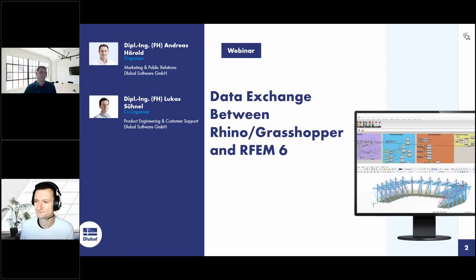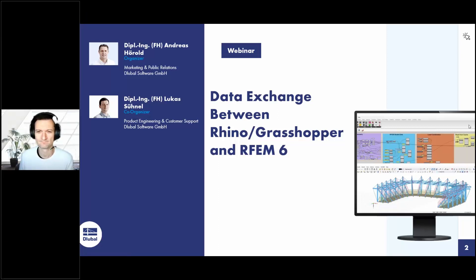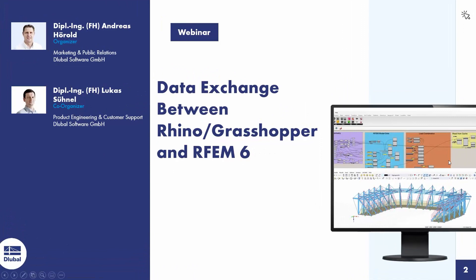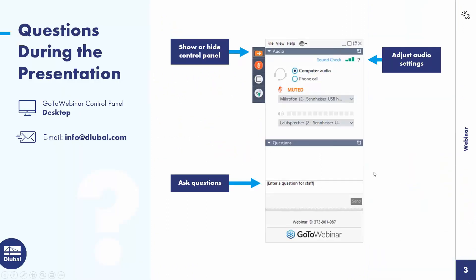We can switch off our webcams so attendees can see the full screen. You can ask questions via the control panel on the right side of your screen. If you don't get an answer during the webinar because there are too many questions, you will receive an email afterwards, or you can email your questions to info@gluba.com.